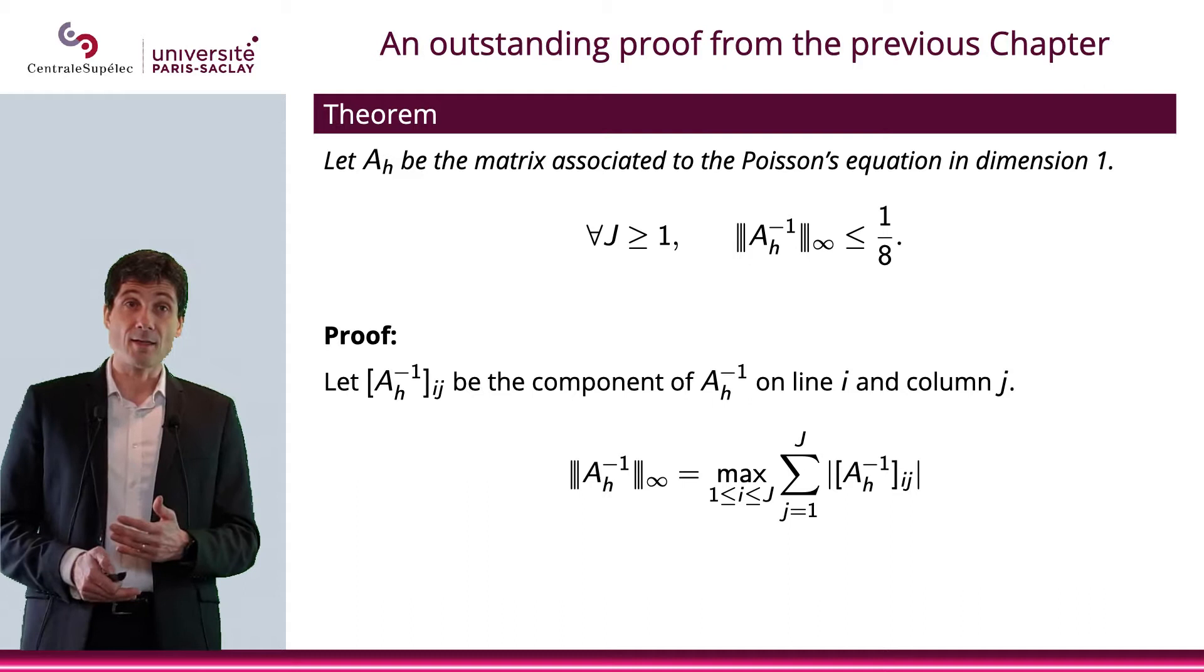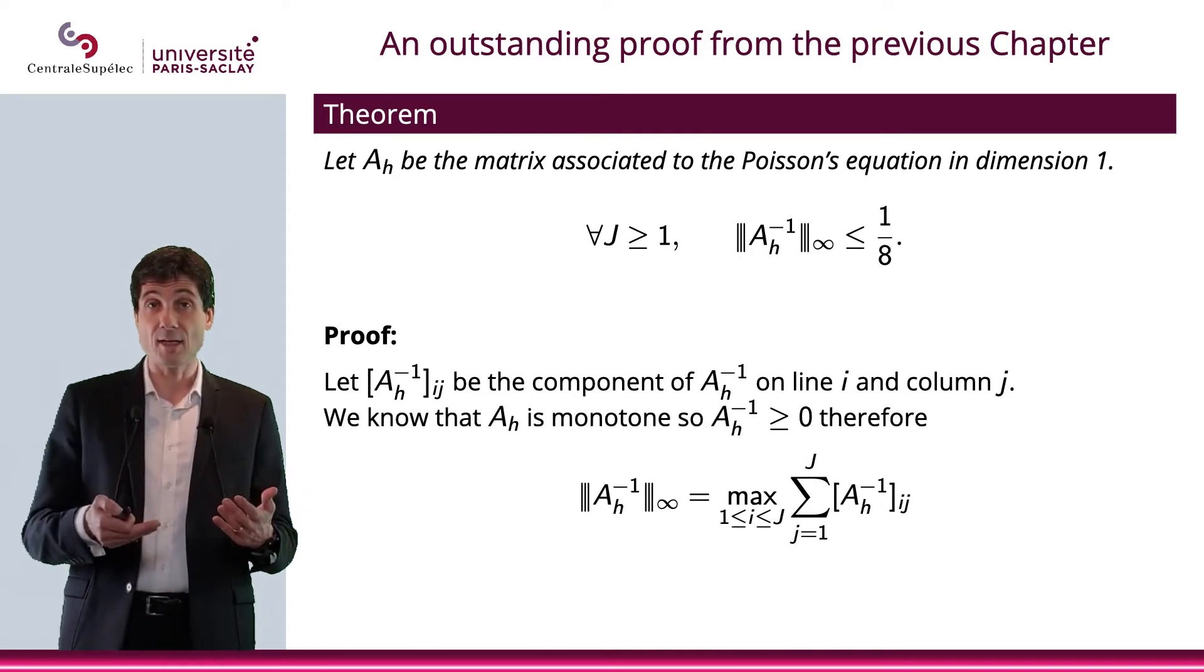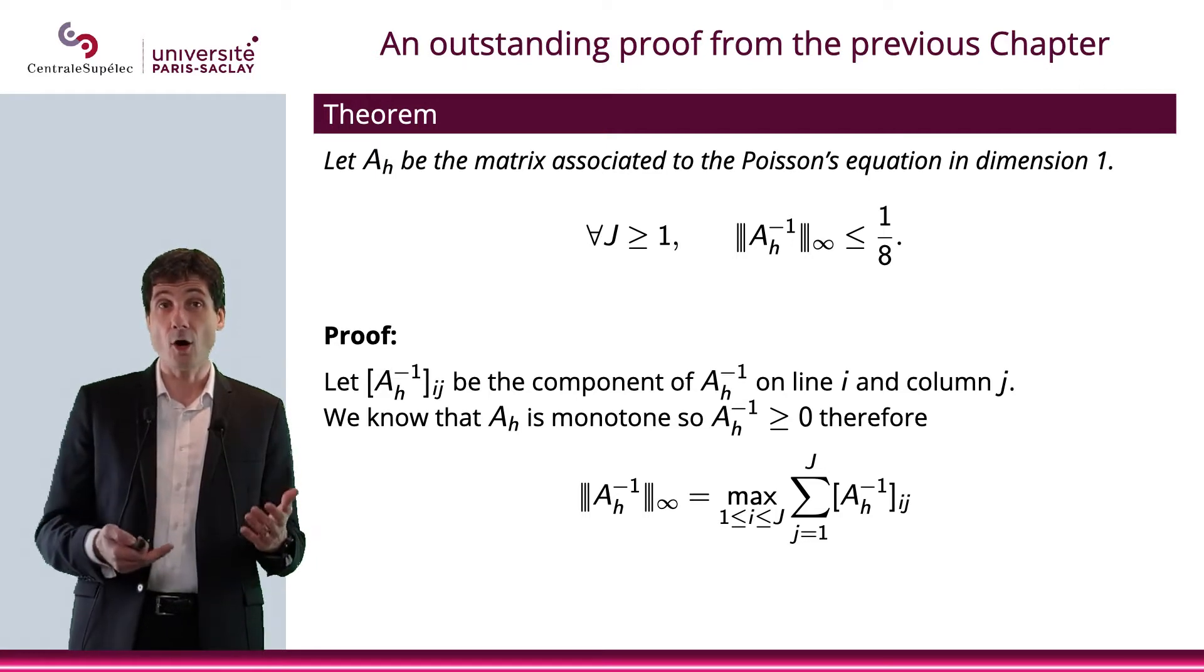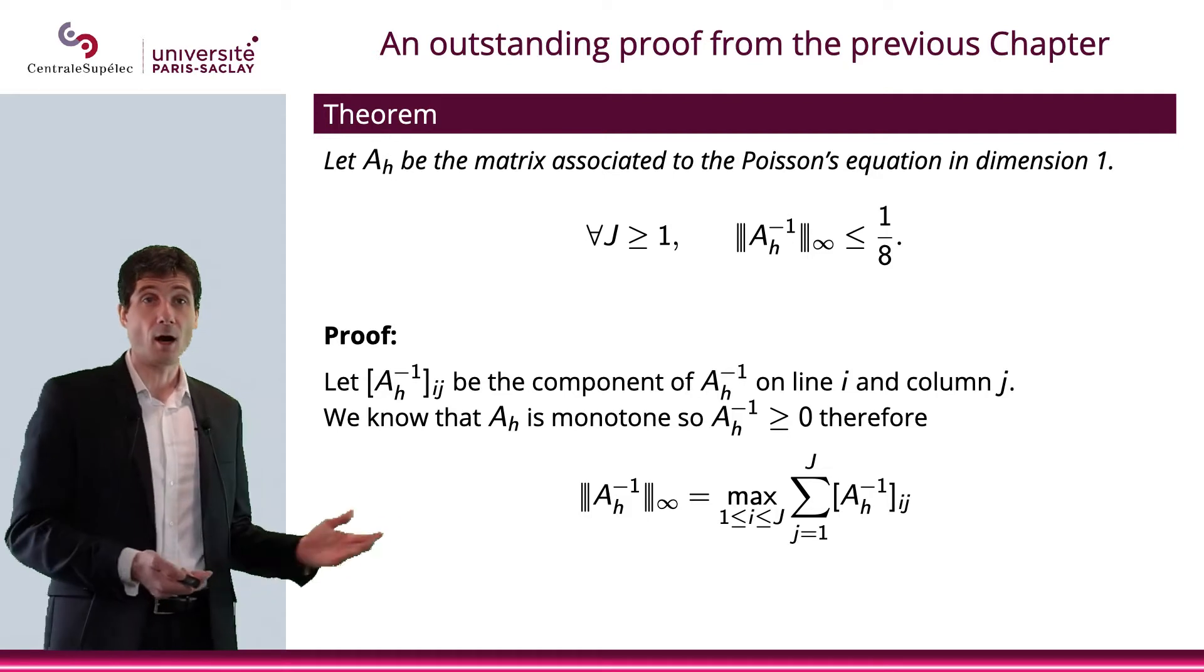Now, what we know is that A_H is monotone, which means that A_H inverse is non-negative. In other words, all of its components are non-negative. So this is why I dropped the absolute values in my sum.